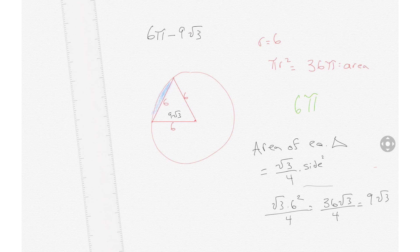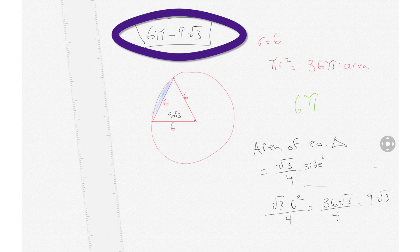So we would have 6 pi minus the area of the equilateral triangle, which is 9 square root of 3. And that would give us the answer. It would be 6 pi minus 9 root 3.